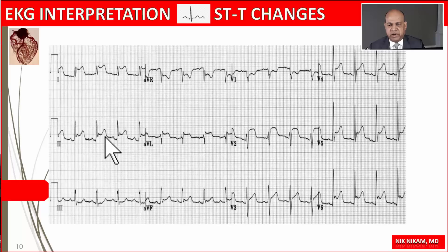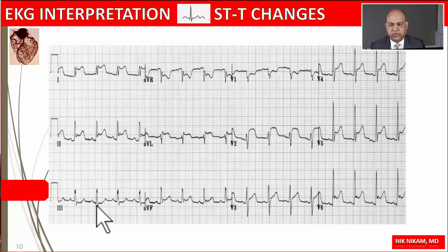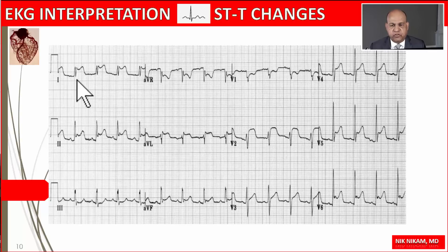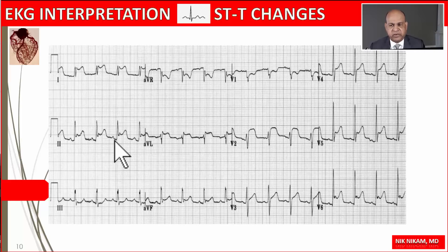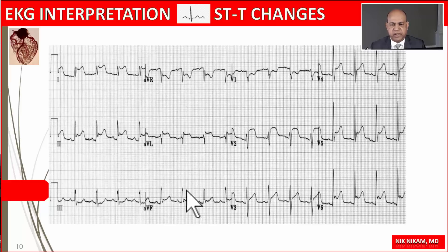Here we have an example of significant ST elevation in multiple leads. In myocardial infarction, we generally like to see them in groups of leads such as II, III, aVF for the inferior wall, or V1 to V4 for the anterior wall. In pericarditis, the ST elevation is diffuse, seen in practically every lead except aVR where we see ST depression. The characteristic findings of pericarditis include upward curving of the ST segment along with J-point elevation and T wave peaking.